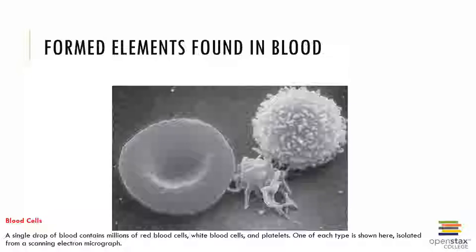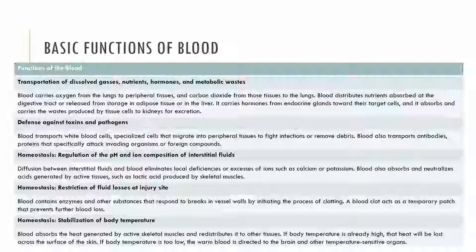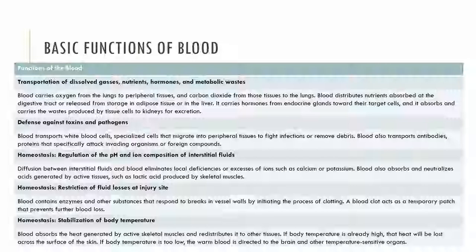The formed elements of the blood include red blood cells, white blood cells, and platelets, and we will examine characteristics of each. The blood is important in the transportation of many substances like dissolved gases, nutrients, hormones, and metabolic waste products. The blood also defends against toxins or pathogens and can even restrict fluid loss at the site of an injury. In addition, the blood is important in the maintenance of homeostasis, for example via pH, ion composition, and body temperature.